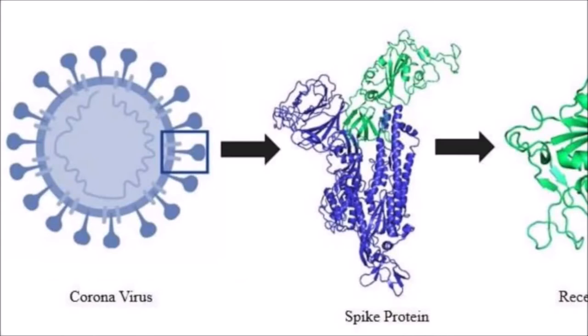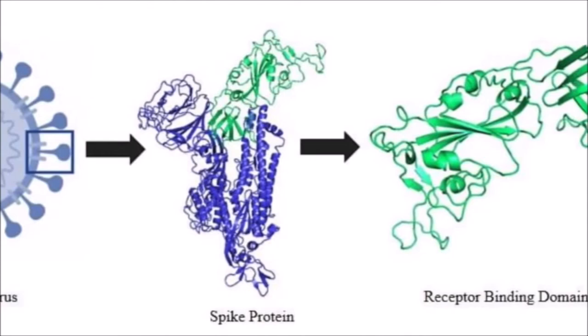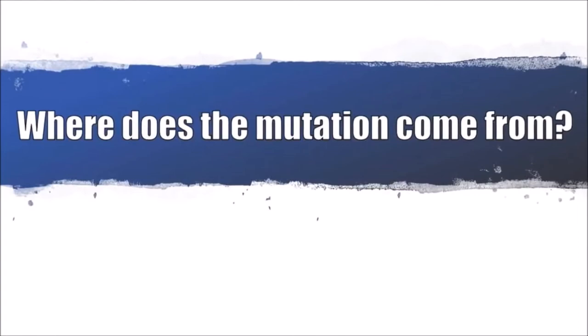Because this amino acid is part of what is called the receptor binding domain, or RBD, the N501Y mutation could affect how readily the virus gets into human cells. More on that later.